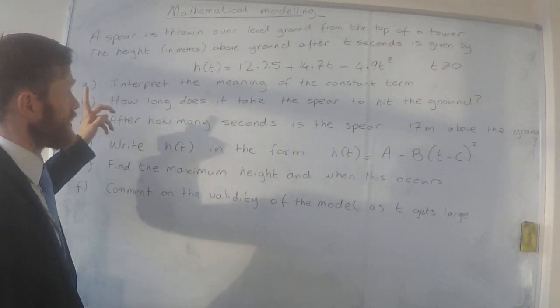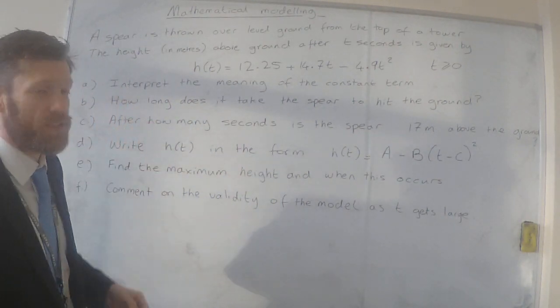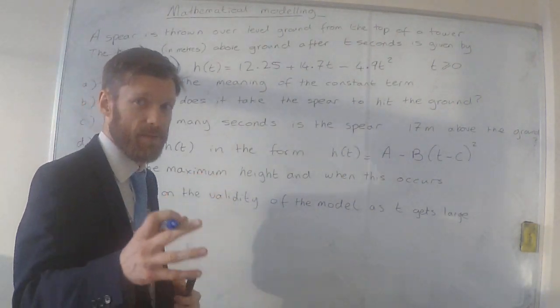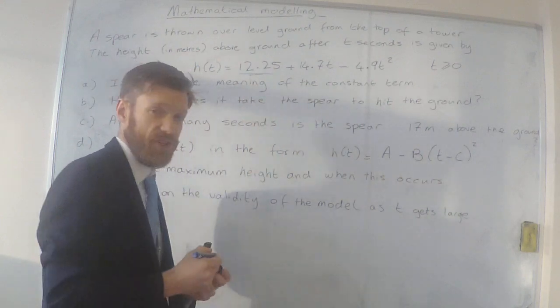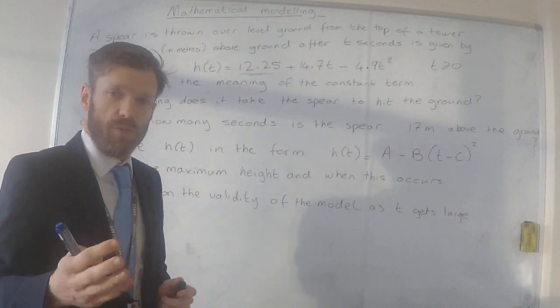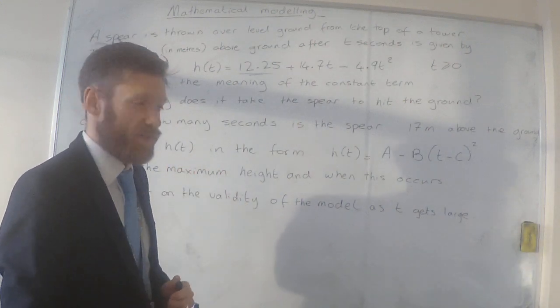Part A says to interpret the meaning of the constant term. The constant term, as in the term that doesn't change, is the 12.25 because that doesn't have a t in it. So what does that mean in the context of this problem?